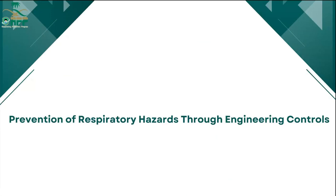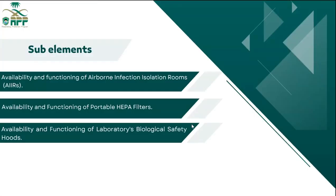After covering the first two elements of the respiratory protection program, the third element is prevention of respiratory hazards through engineering control. The sub-elements include: availability and functioning of the airborne infection isolation room (AIIR); availability and functioning of the portable HEPA filter; and availability and functioning of the laboratory biological safety hoods. All these sub-elements are important to ensure the elements are available in engineering control.